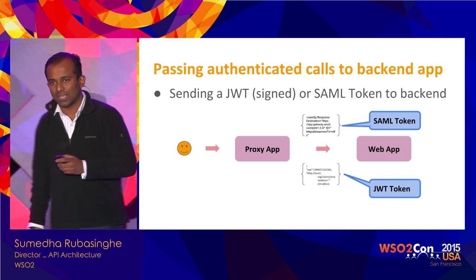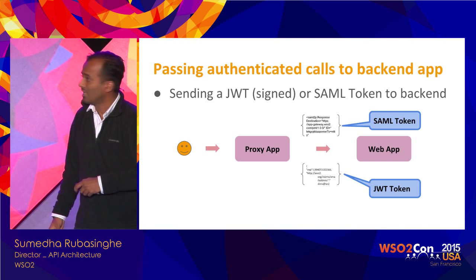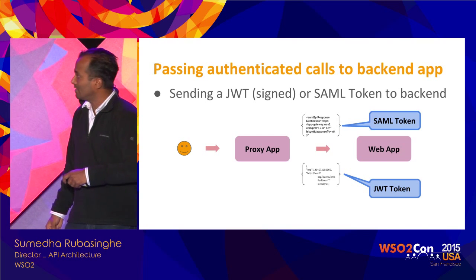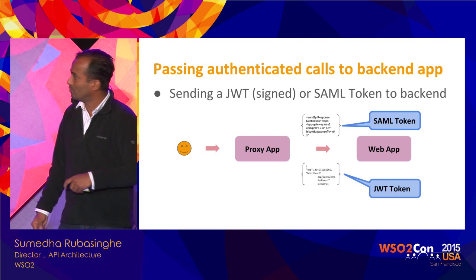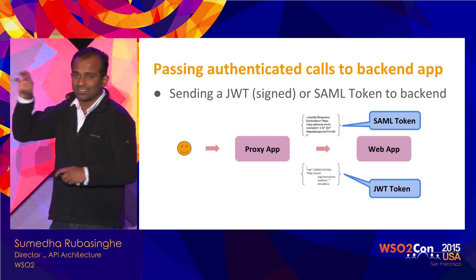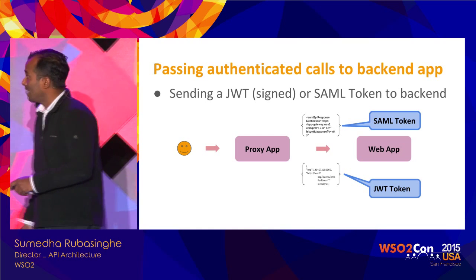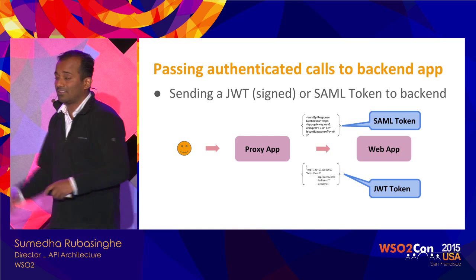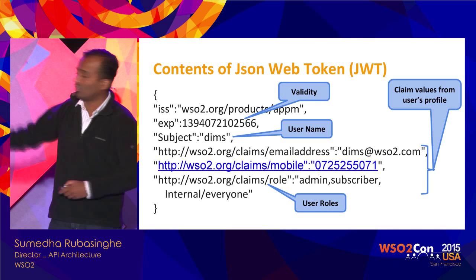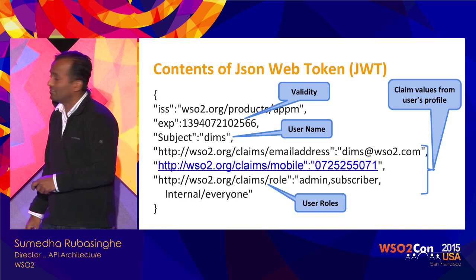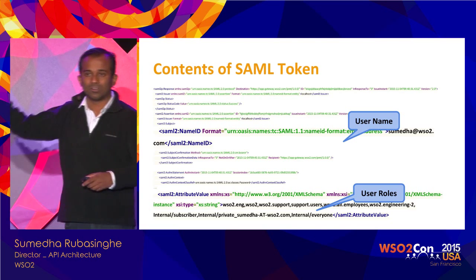When going to the IDP, from the proxy application to the real web application there are two token options you can pass: a SAML token or a JWT token. Both tokens carry information about the logged-in user to the backend web application — the backend can see there's a user logged in and the token contains attributes like roles and validity periods. The backend application can then make decisions based on those. A similar set of attributes is also available on the SAML token.